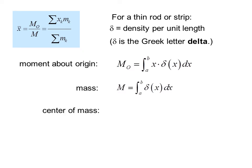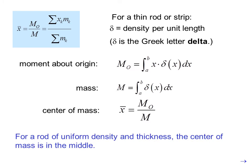So the center of mass, x̄ equals M_o divided by M, that is, the moment about the origin divided by the mass. For a rod of uniform density and thickness, the center of mass is the middle.